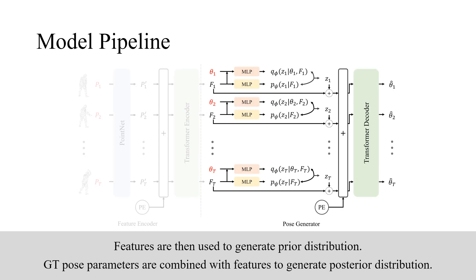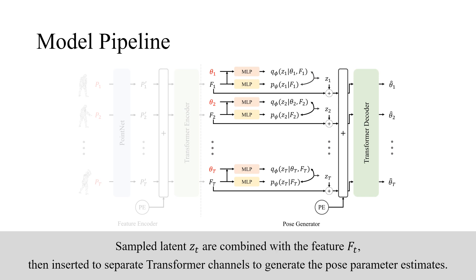Features are then used to generate prior distribution. Ground-truth pose parameters are combined with features to generate posterior distribution. Sampled latent ZT are combined with the feature FT, then inserted to separate transformer channels to generate the pose parameter estimates.